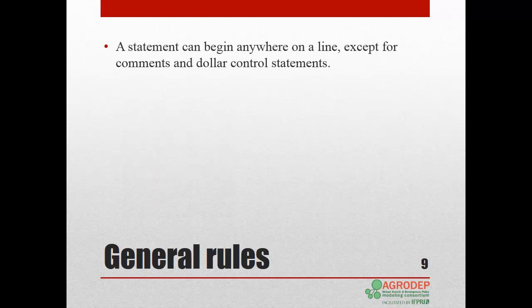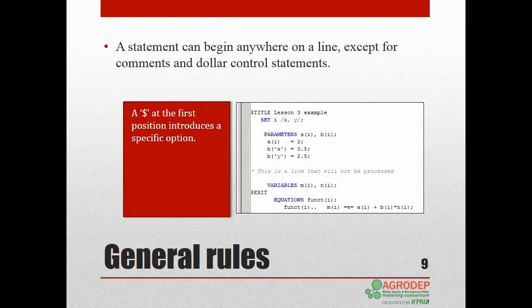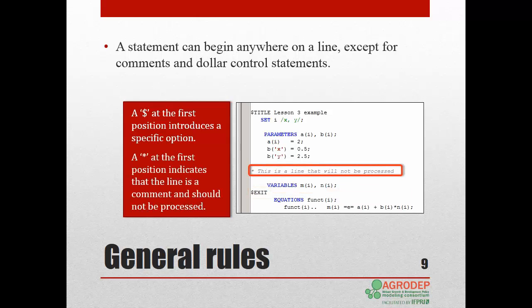A statement can begin anywhere on a line except for comments and dollar control statements. A dollar sign at the first position introduces a specific GAMS option, for example, title and exit are GAMS options. An asterisk or a star at the first position indicates that the line is a comment and should not be processed. Note that it appears in light gray in GAMS IDE.